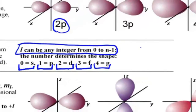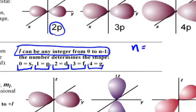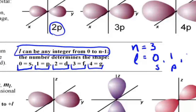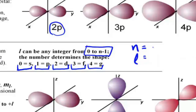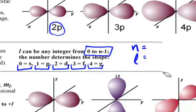For example, if the principal quantum number is 3, then l can have values 0 (s), 1 (p), or 2 (d) — that is 0 to n minus 1. If n equals 2, l can be 0 or 1, in other words s or p. And if n equals 1, l can only be 0, or s.